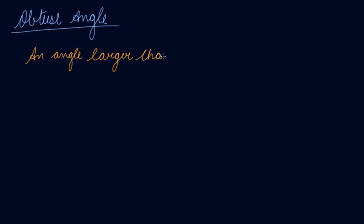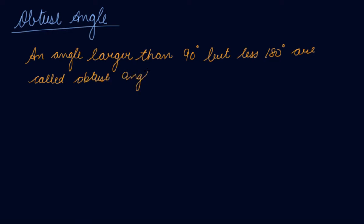Now obtuse angle — an angle larger than 90 degrees but less than 180 degrees is called an obtuse angle. This means an angle larger than a right angle and less than a straight angle. For example, 110 degrees, 120 degrees, 150 degrees, 160 degrees — all these angles are obtuse angles.